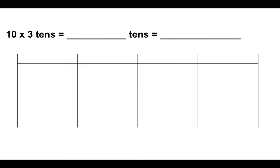Let's say you're given a different problem. Here, again, we're going to start by labeling our place value chart. Now we want to solve for ten times three tens. How am I going to read that in my head? You're going to read it as ten groups of three tens.